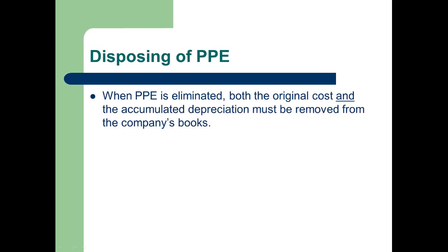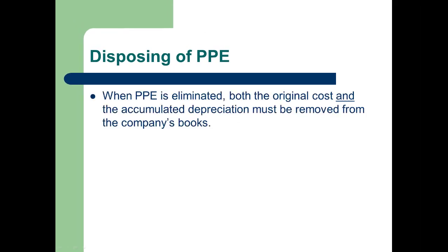Now it's time to talk about the flip side. What do we do when we're ready to dispose of the asset? Basically, the rule here is that when PP&E is eliminated or disposed of, we have to get it off of our books, and everything related to that asset off of our books. Which means there's two pieces to this. There's anything that we've capitalized, and all of our depreciation has to come off of our books too. We don't want anything in our accumulated depreciation account that isn't still there. We don't want that reducing the value of our remaining assets by having this big contra asset that relates to nothing.